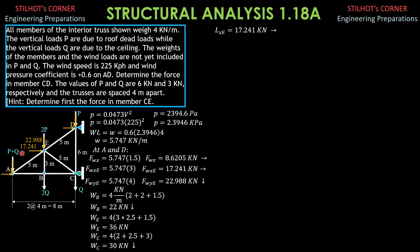So LXE is equal to 17.241 kN rightward, LYE is equal to 2 times vertical load at E is 2P, 2 times 6 plus 22.988 vertical component of wind load plus gravity load at E due to the weight 36, which is this. So the vertical load at E is equal to total vertical load at E is 70.988 kN downward.